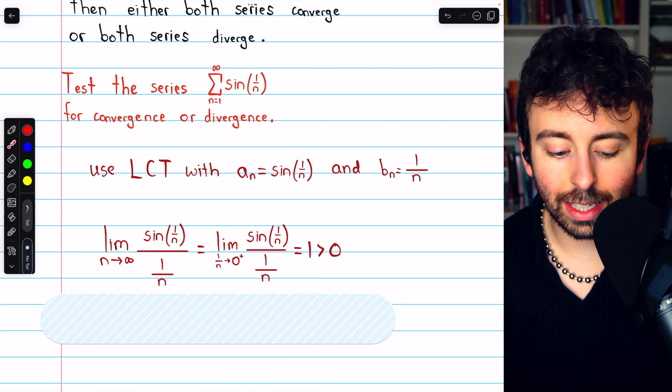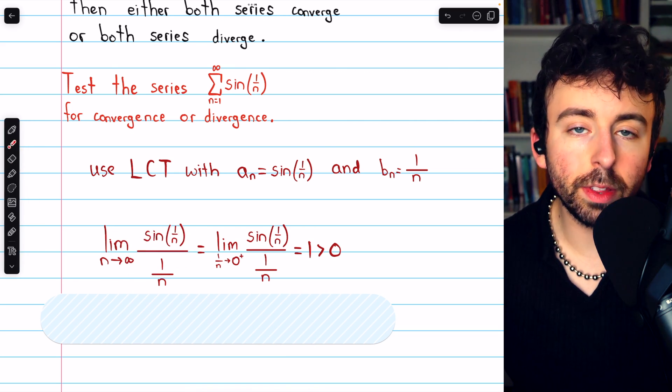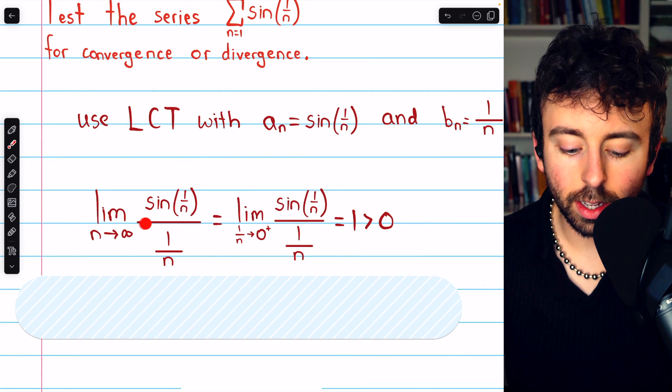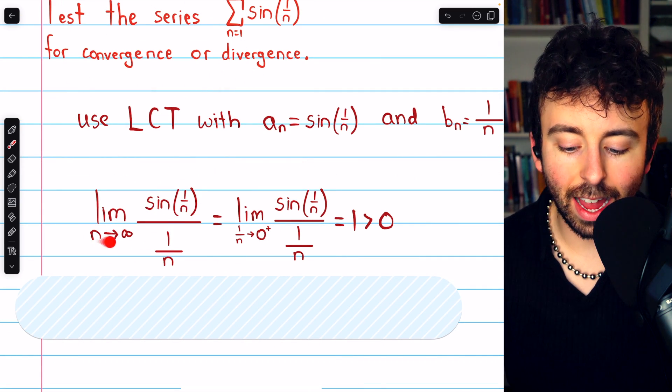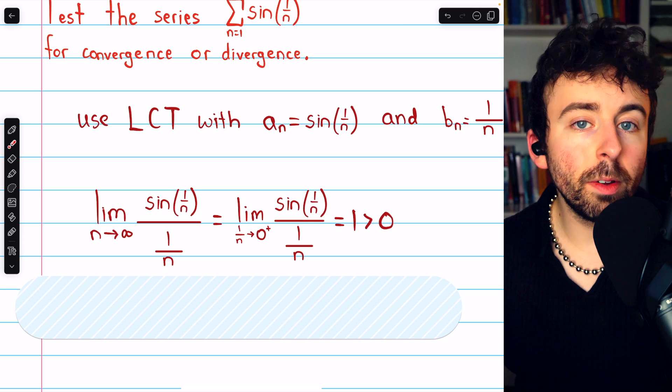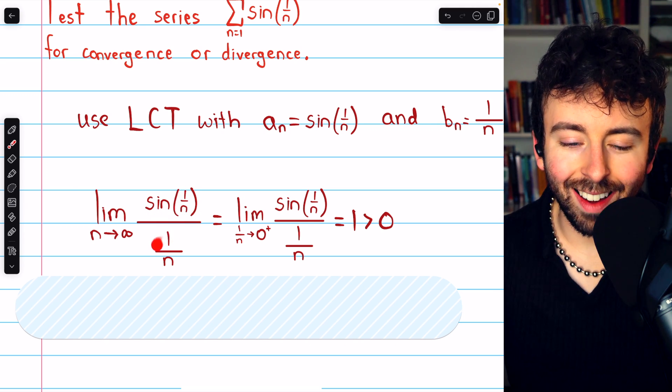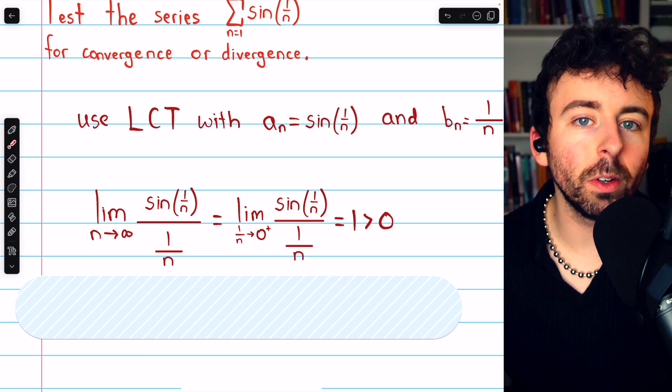We then consider the limit of the ratio of the terms of these two series. That's the limit of sine of 1 over n divided by 1 over n as n goes to infinity. We should immediately recognize this as sine of a thing over a thing. That's a pretty familiar limit form.